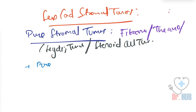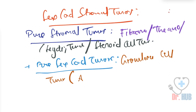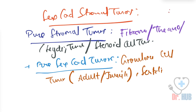There is also another category, the pure sex cord tumors. Under the pure sex cord tumors, it includes the granulosa cell tumor — both the adult and juvenile types — and then it also includes the Sertoli cell tumor.